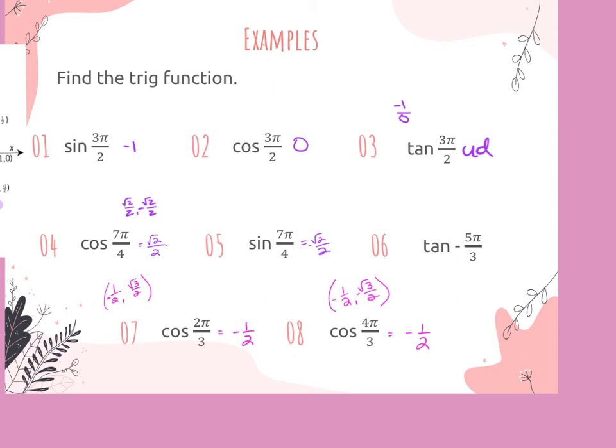That's the end of the notes today. We're inverse-ing it — you're going to have two answers like we did in the last chapter. We had to figure out which quadrant, do the value to get the reference angle, and then figure out which it is. It's the same except it's all unit circle based.